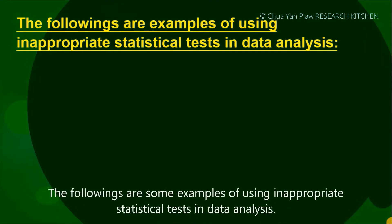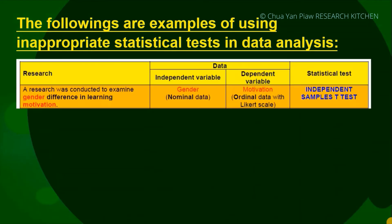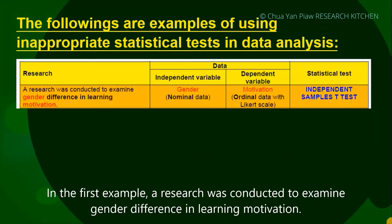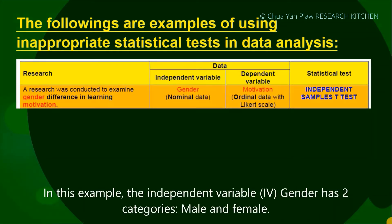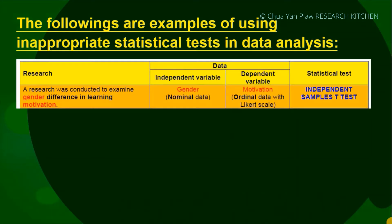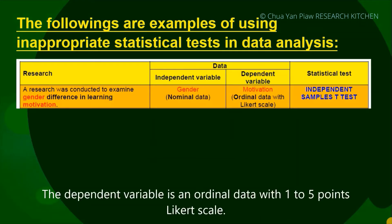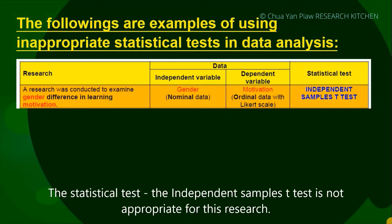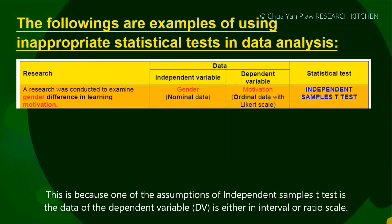The following are some examples of using inappropriate statistical tests in data analysis. In the first example, a research was conducted to examine gender difference in learning motivation. The independent variable gender has two categories, male and female. The dependent variable is ordinal data with a one-to-five point Likert scale. The independent sample t-test is not appropriate for this research, because one of the assumptions of the independent sample t-test is that the dependent variable must be in interval or ratio scale.